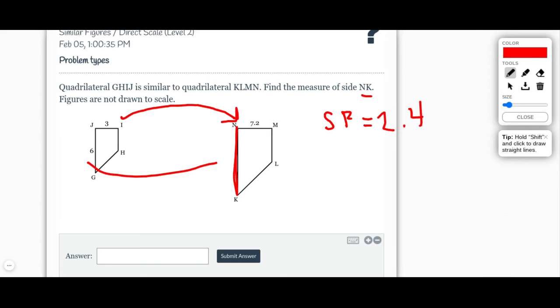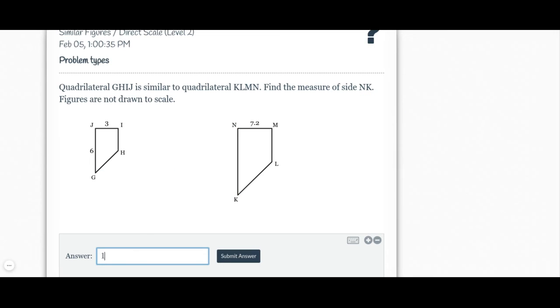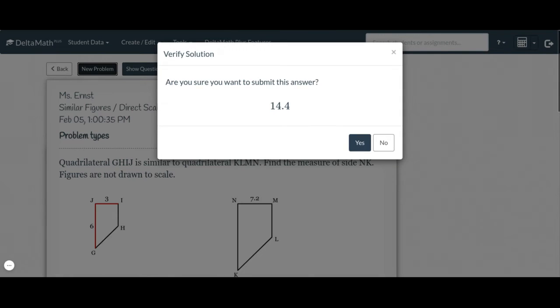So now I'm going to take 6 times 2.4 to get my side NK that I need. So I have 6 times 2.4 and I end up getting 14.4. So we'll type that in here. Again, everything needs to go to the nearest tenth in order for them to be counted correct.